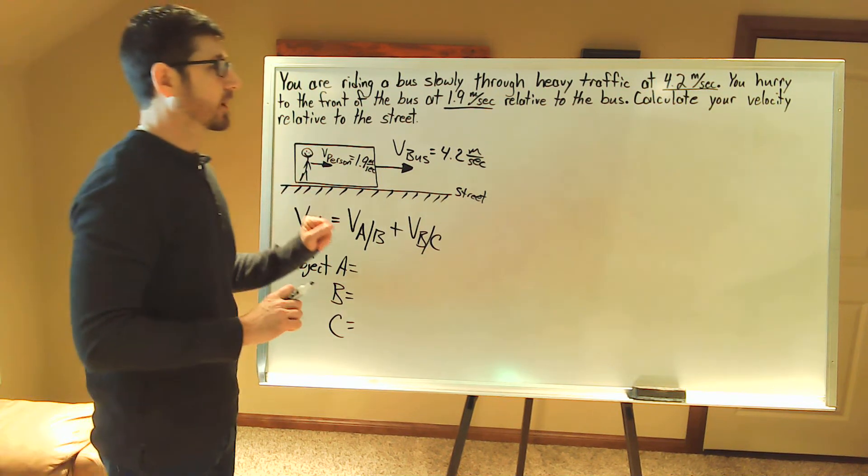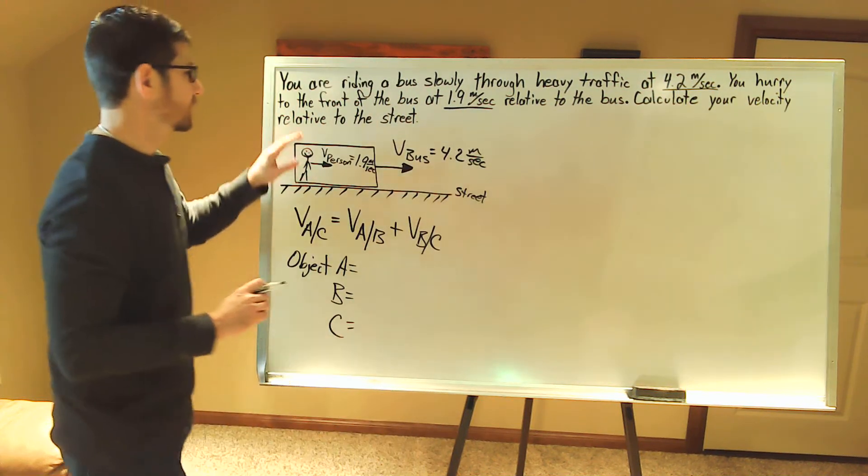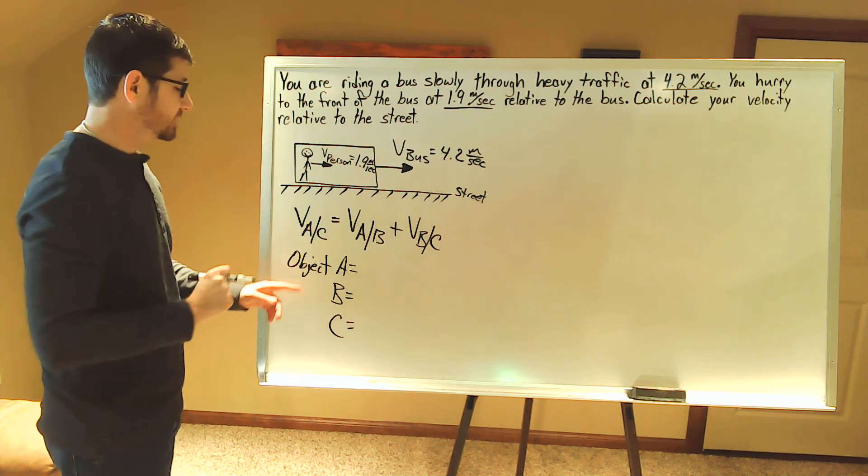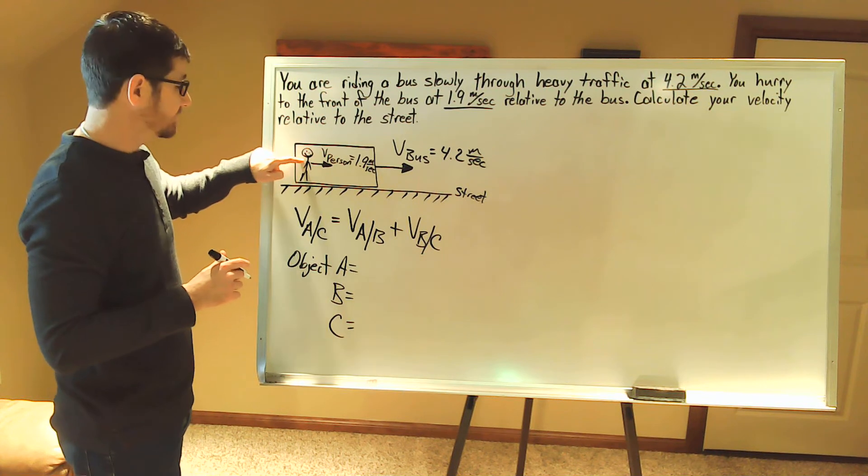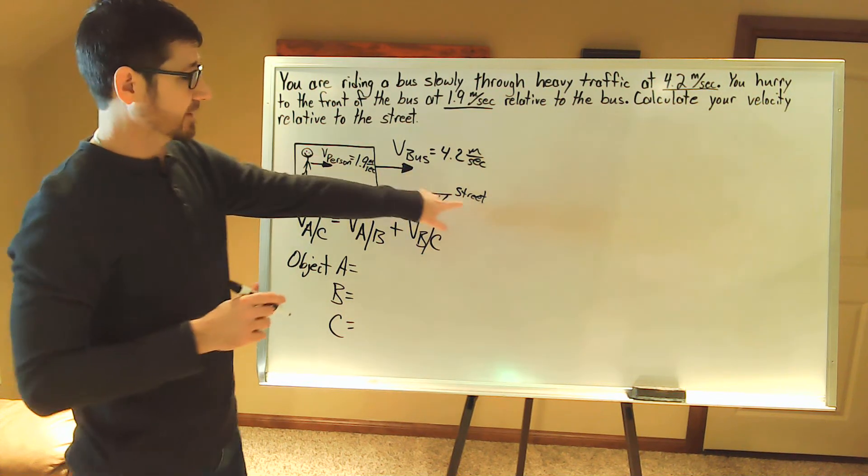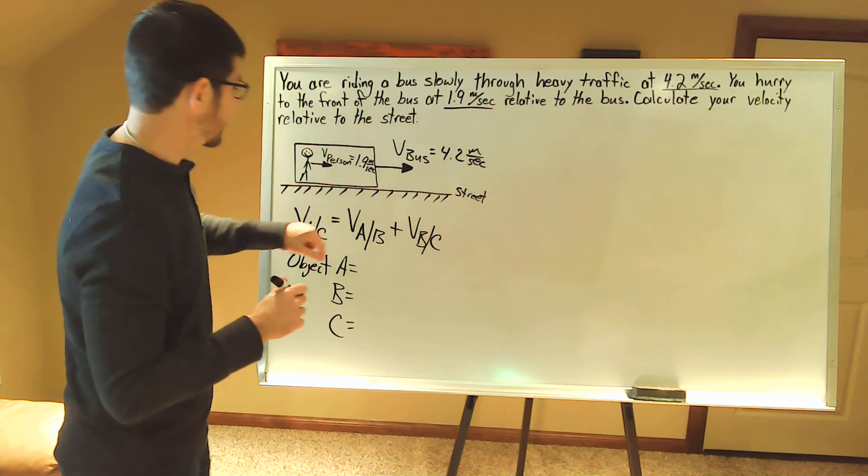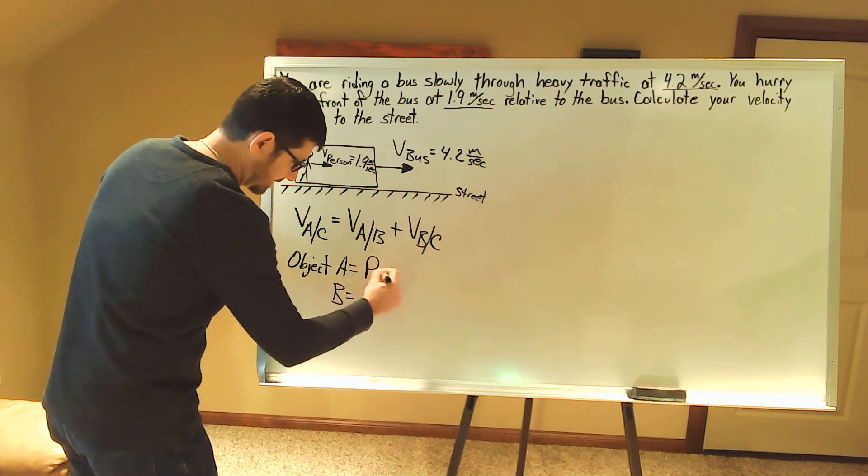So let's figure out what object A is here, and we need to read the problem. It says calculate your velocity relative to the street. So object A in our calculation, we want to know the velocity of the person with respect or relative to the street. So that means object A is going to be you, the person.